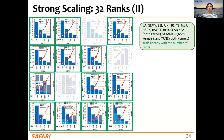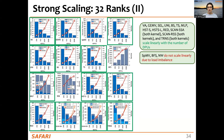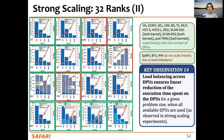For results up to 32 ranks — 2,048 DPUs — again most benchmarks scale linearly with the number of DPUs. Only SPMV, BFS, and Needleman-Wunsch show no linear scaling due to load imbalance. Load balance across DPUs ensures linear reduction of execution time for a given problem size when all available DPUs are used. For those three benchmarks without load balance, we don't see linear reductions in execution time when increasing the number of DPUs.